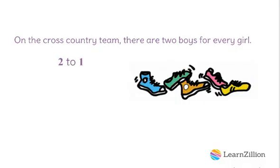The second way we can represent a ratio is by using a colon. We read it the same as when we used the word 'to,' but now we have a colon instead of the word. We can represent this boys to girls ratio as two to one. The last way we can represent a ratio is as a fraction. Since our ratio is two boys for every girl, we have a ratio of two over one.